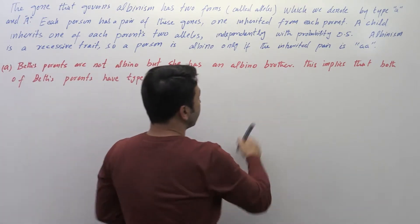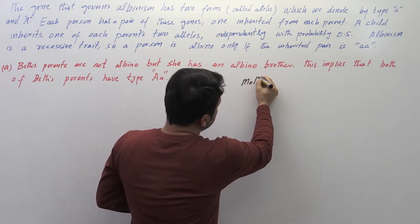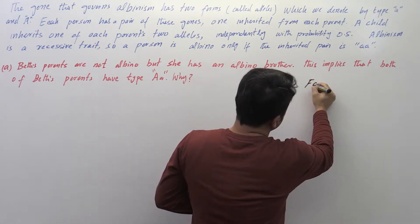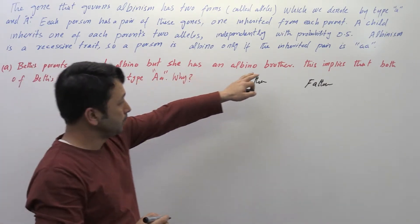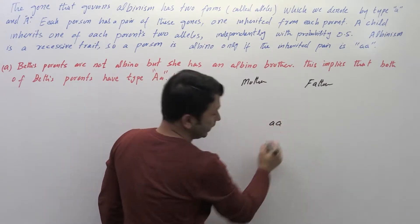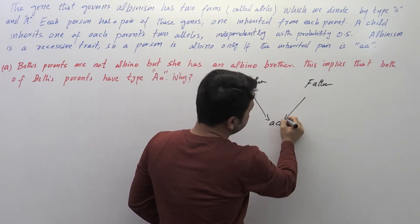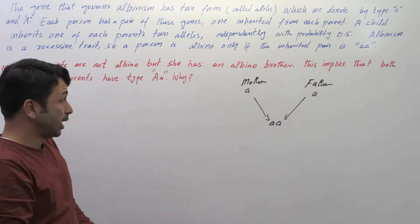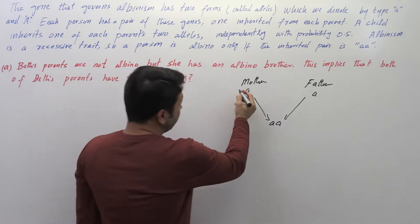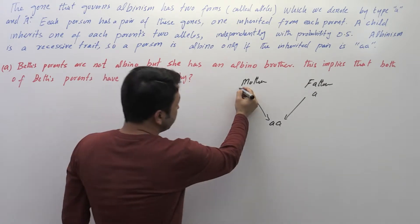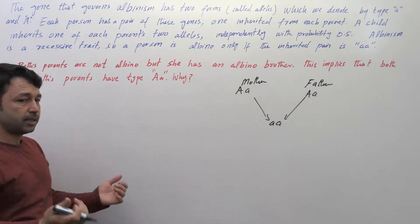As per the given information, each parent is contributing one allele — mother and father. Her brother is albino, so his type should be small 'aa'. One of these small 'a' alleles is coming from the mother and the other from the father. Since the parents are not albino, they couldn't be of type small 'aa'. So the only remaining option is that each parent is of type capital 'A' and small 'a'.